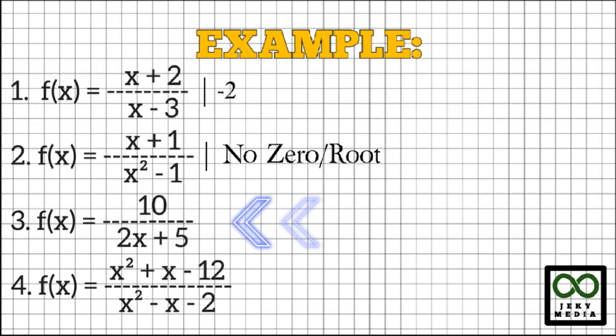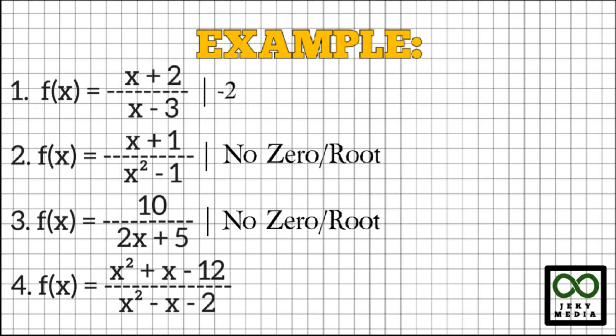Number 3: f(x) equals 10 over (2x + 5). Again, equating a number to zero is not allowed. Therefore, no zero or root has been found.